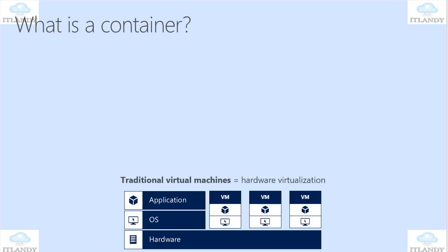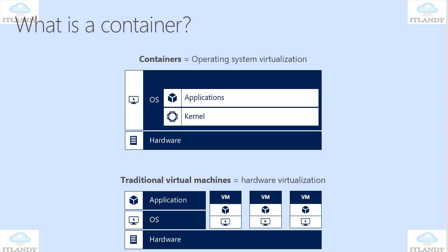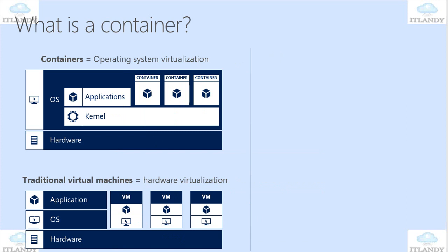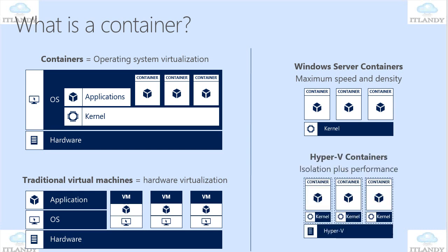We then improved a little bit and introduced something called a container. Containers work like this: you have one hardware, one VM, and on the VM you have your OS and basically the kernel. Underneath that, you can have multiple containers — sharing the kernel on the same hardware. In a more modular approach, a Windows Server container gives us maximum speed and density, and then you have the Hyper-V container, which gives us isolation plus performance.